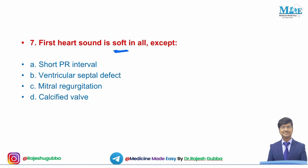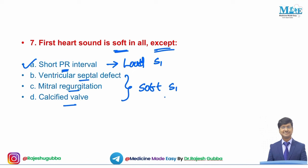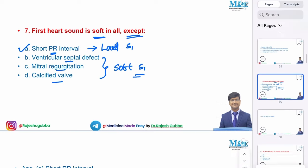Next question: first heart sound is soft in all except — short PR interval, VSD, mitral regurgitation, or calcified valve. In short PR interval you will have loud S1, not soft S1. In VSD, mitral regurgitation, and calcified valve, you will have soft S1. So the answer is short PR interval.